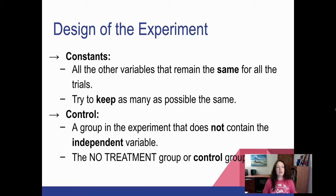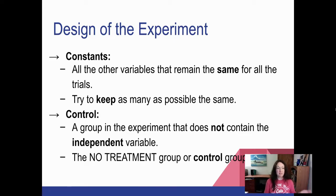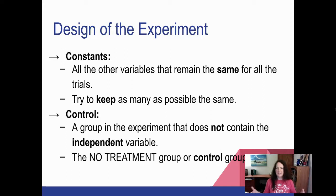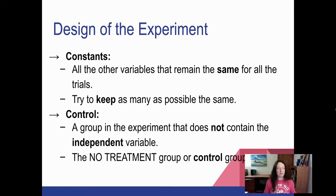Constants are all the other variables in the experiment that remain the same for all of the trials. Ideally, you want to keep everything else the same if possible. That can be tricky in, say, medical studies where you have a random sample and you don't always know if everybody's following the same lifestyle. The only difference is one group gets the pill and one group doesn't, so it's not always possible to keep things constant, but you want to do as much as possible.